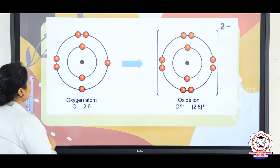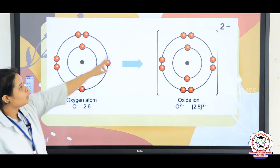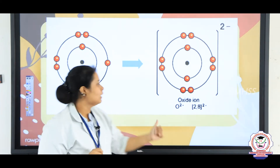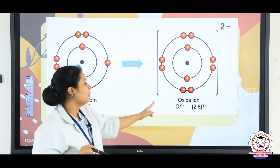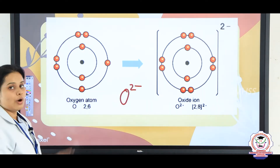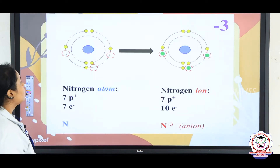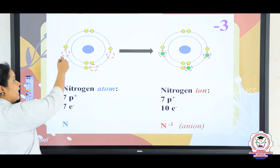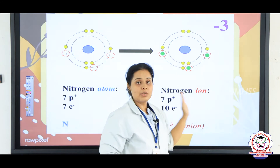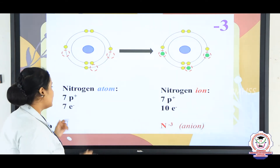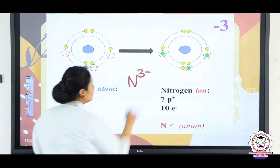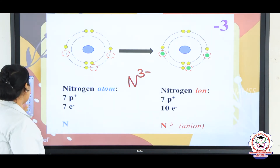For 2-electron addition, in oxygen, if you add 2 electrons — going from 6 to 8 — it needs 2 more electrons. When the outer shell becomes fully filled, it will become O2 minus, which is the oxide ion. For nitrogen, which lacks 3 electrons in the outer shell, if it adds 3 electrons, it will become N3 minus, known as the nitride ion.